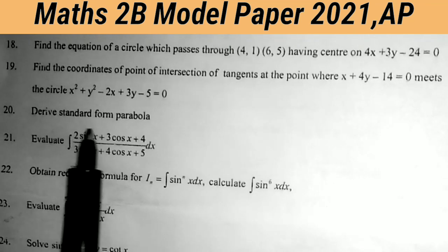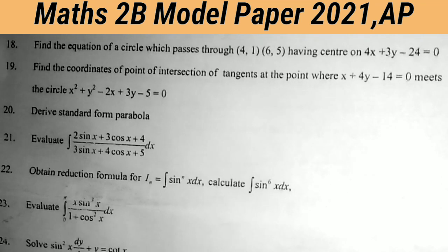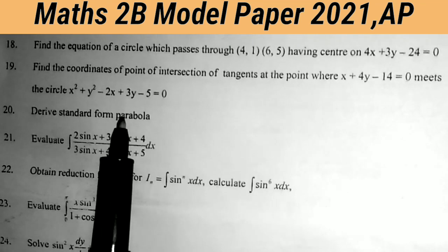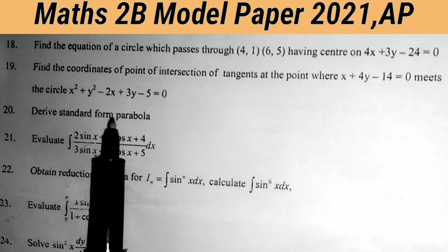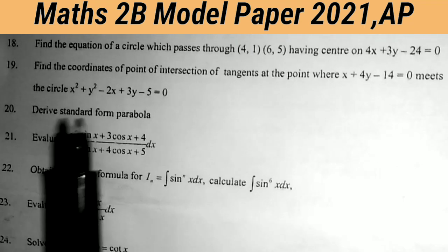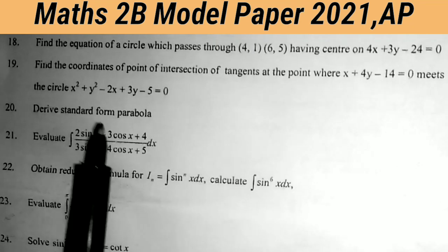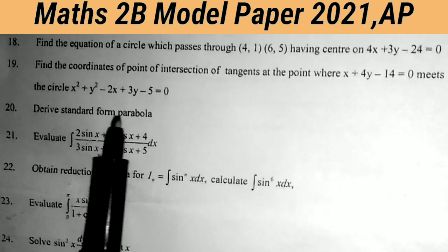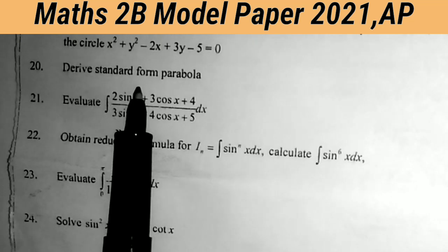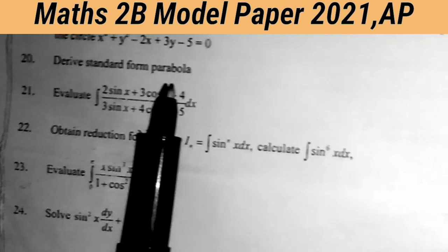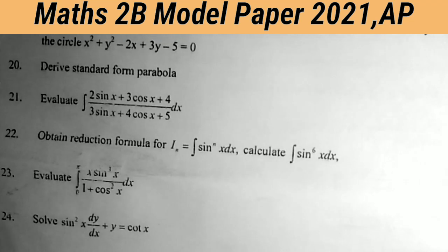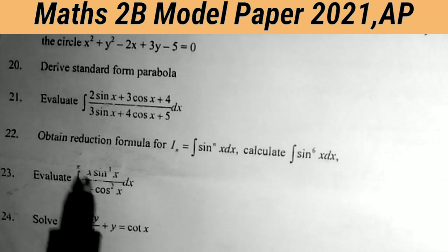Twentieth question: derive the standard form of the parabola. This is a guaranteed essay question — this question will definitely be in the public examination. There is a 90% chance this question comes in the public examination. Derive the standard form of the parabola.